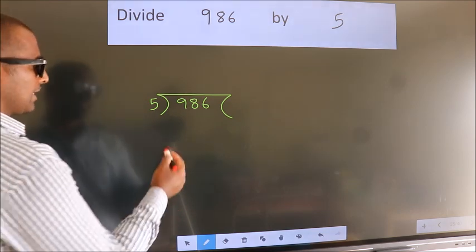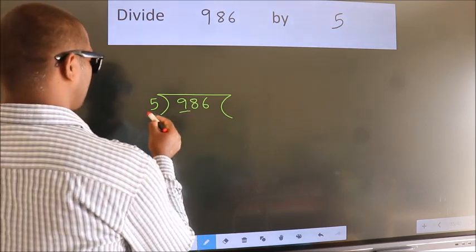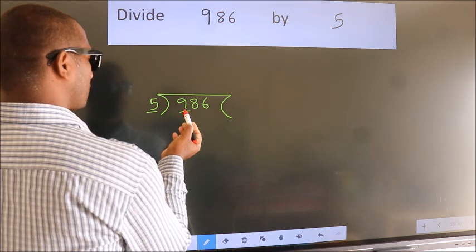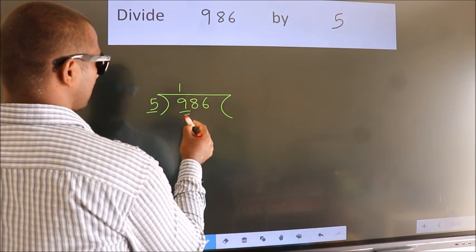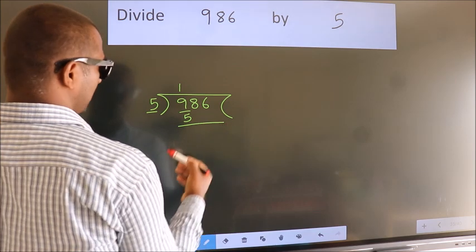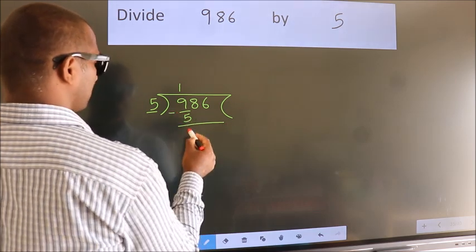Next, here we have 9, here 5. A number close to 9 in the 5 table is 5 once, which is 5. Now we should subtract. We get 4.